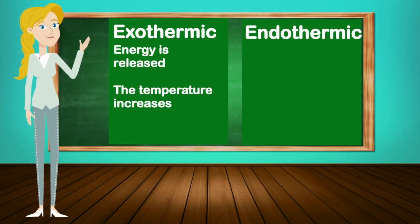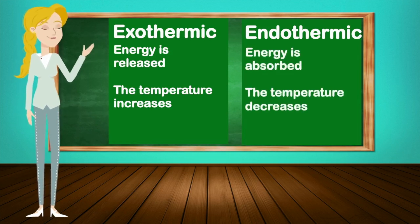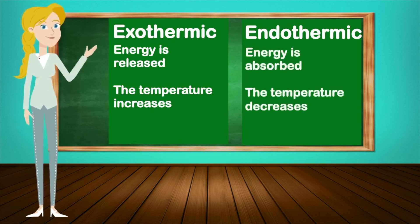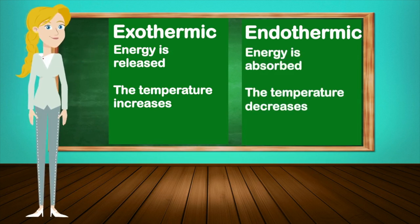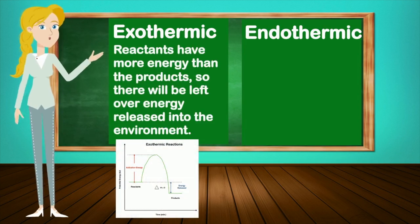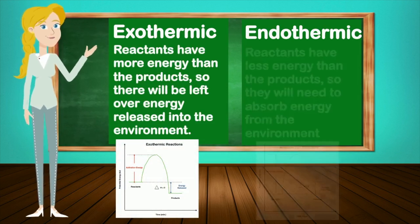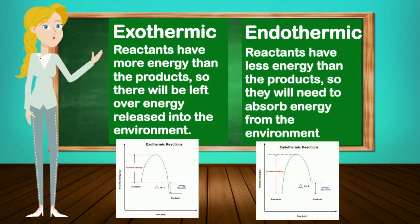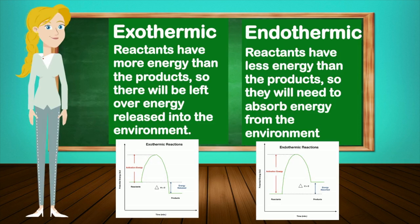In an exothermic reaction, energy is released and the temperature increases. In an endothermic reaction, energy is absorbed and the temperature decreases. The reactants in an exothermic reaction have more energy than the products, so there will be leftover energy released into the environment. In an endothermic reaction, the reactants have less energy than the products, so they need to absorb energy from the environment.